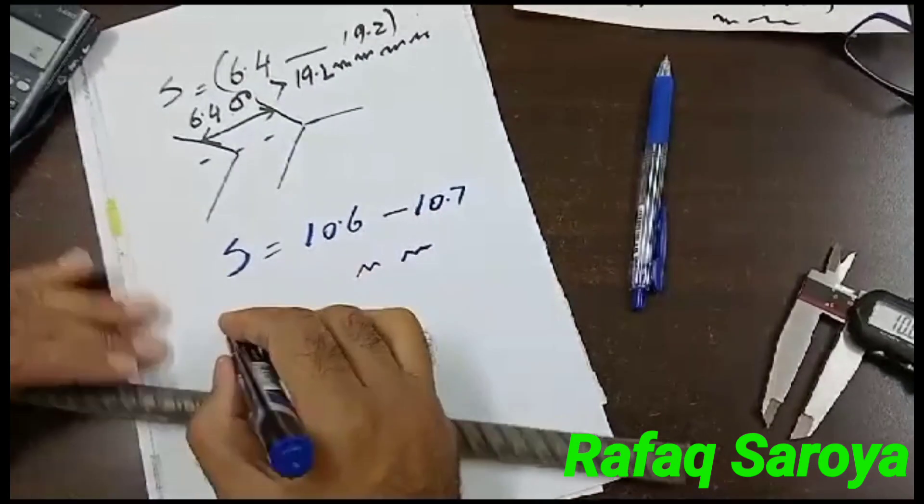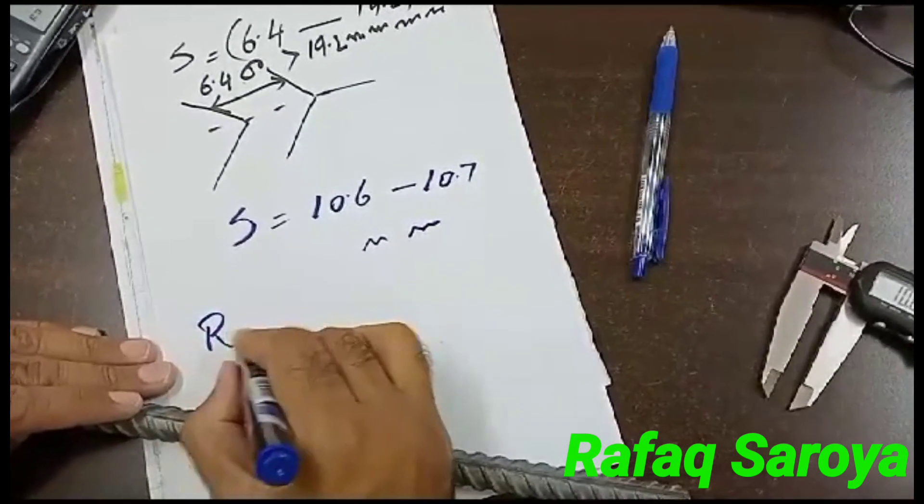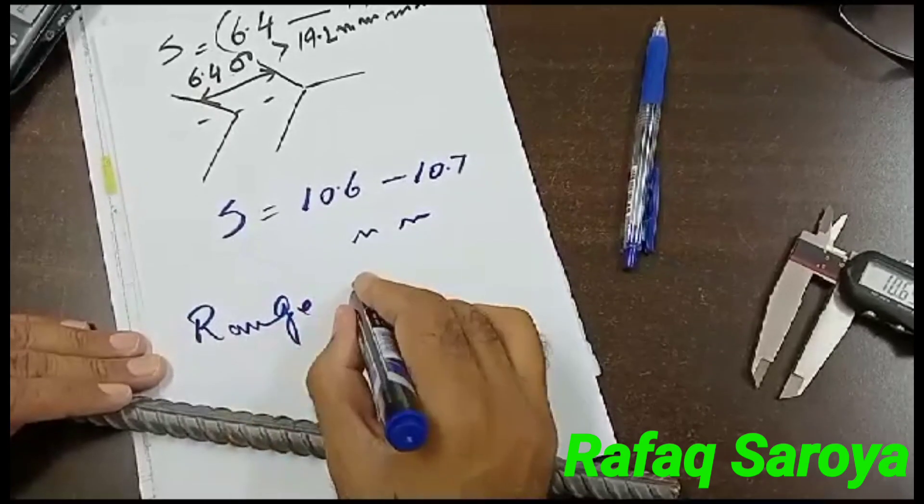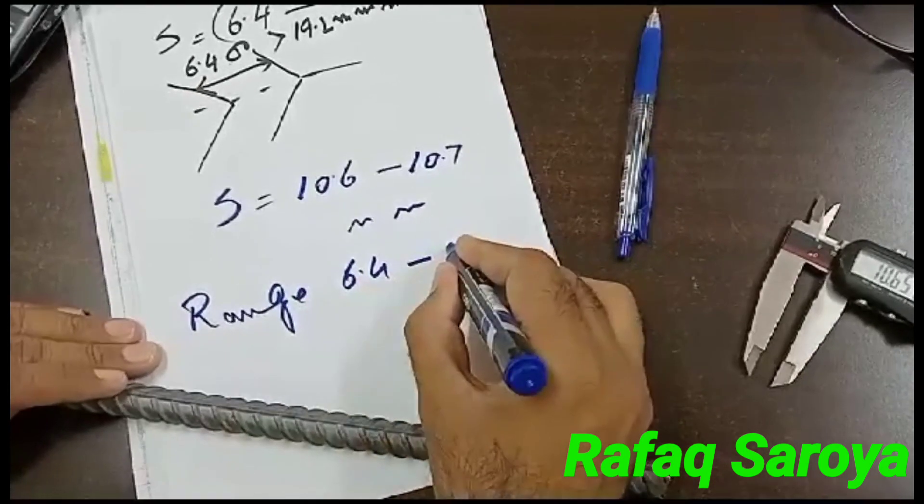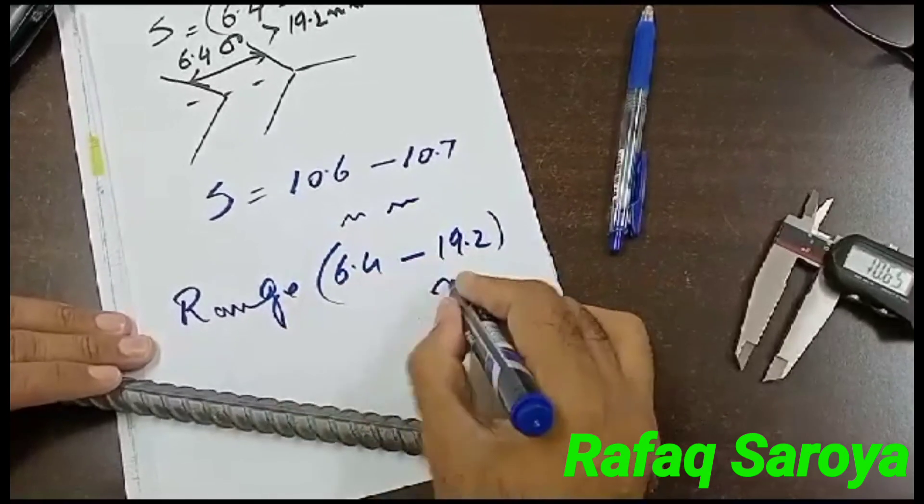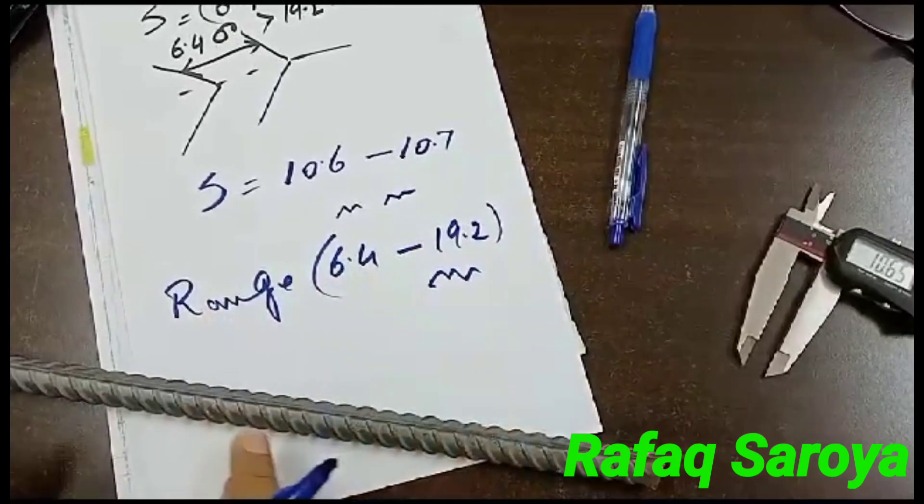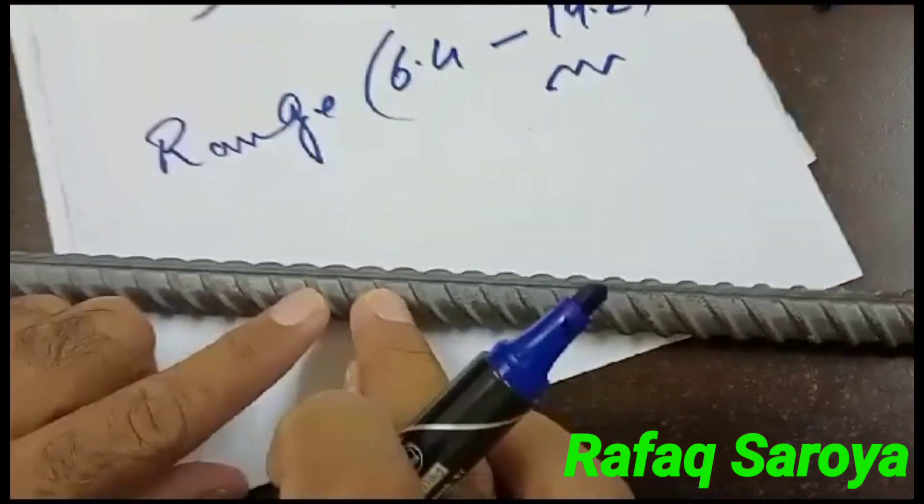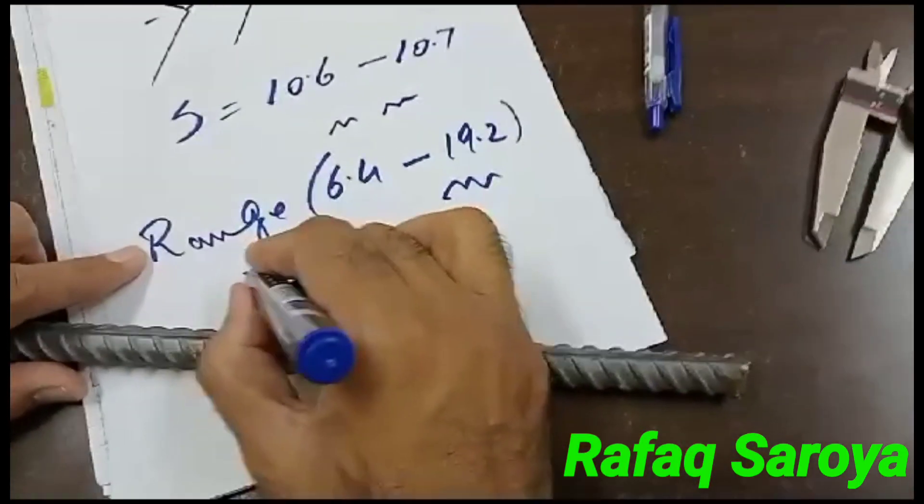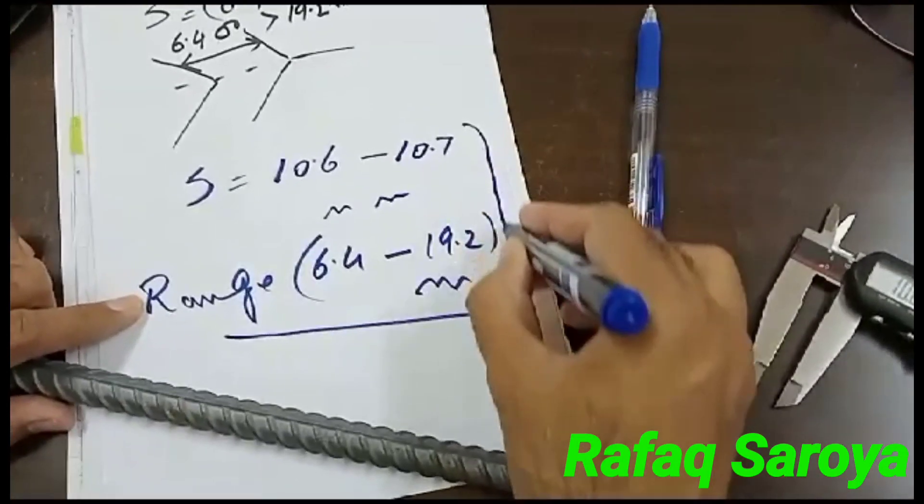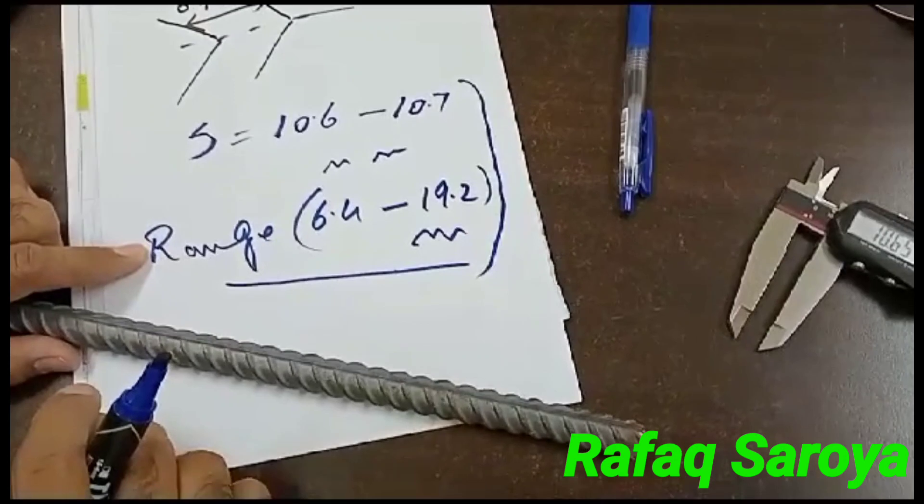So it is well within the range. What is the value of range given as per this standard? 6.4 up to 19.2mm. So it means this spacing, whatever is provided, is important to know about, which I have given you in this introduction and how to calculate it.